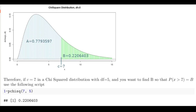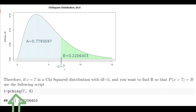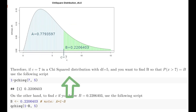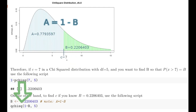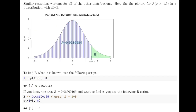In the chi-squared example, if we were trying to solve the probability that x is greater than 7, we could use p chi-squared of 7 with 5 degrees of freedom — that tells us area A, and taking 1 minus A gives us area B. On the other hand, if we know B, then 1 minus B gives us A, and therefore q chi-squared of (1 minus B) returns the value of 7 that we needed. A similar strategy works for each of the other probability distributions.